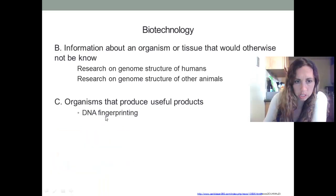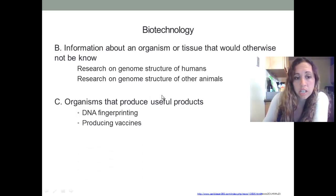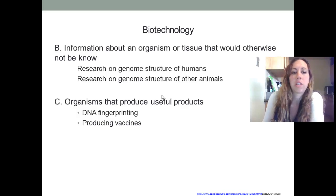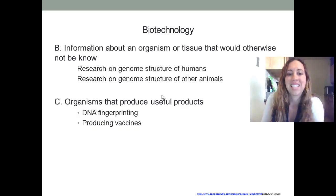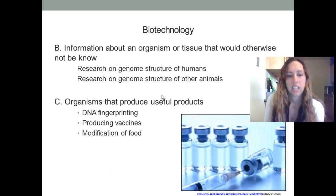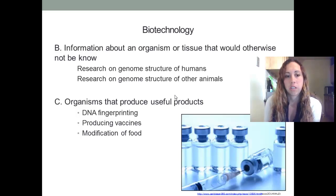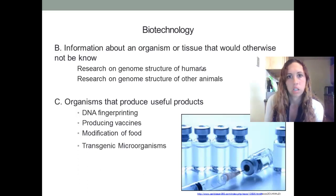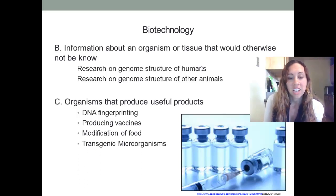You can also do DNA fingerprinting using biotechnology, producing vaccines, modification of food such as GMOs — genetically modified organisms — and transgenic microorganisms.